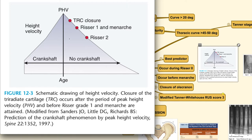Peak height velocity has a huge relation with the treatment plan. If you perform a fusion surgery or place an instrument at the posterior aspect of the spine before the peak height velocity, the crankshaft phenomenon will occur. The spine grows anteriorly and posteriorly at an equal rate; when you lock the posterior aspect in position, the anterior aspect will still grow and will eventually outgrow the posterior segment, thereby reversing the curve — this is the crankshaft phenomenon.